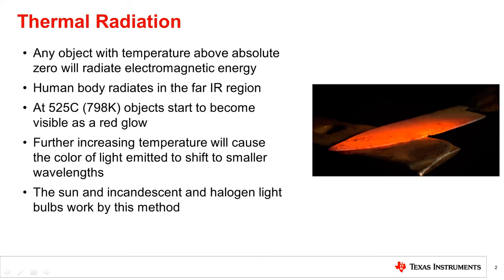Any object that has a temperature above absolute zero will radiate electromagnetic waves of several wavelengths due to a process called thermal radiation. As was mentioned in the previous video, the human body radiates predominantly in the far infrared region.